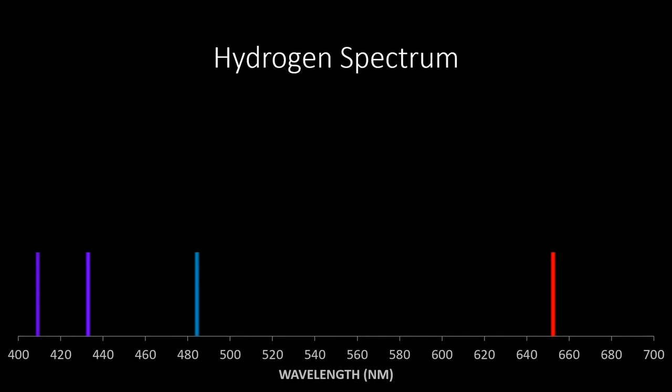This is the spectrum of hydrogen. It has four lines: a red line, a teal line in the middle, and two purple lines at the far left. You want to note the location of each of those lines so you can write down the wavelength off the scale because we'll be doing some calculations with those.